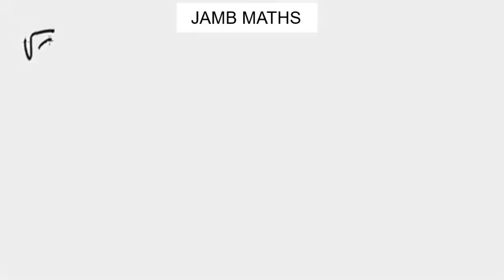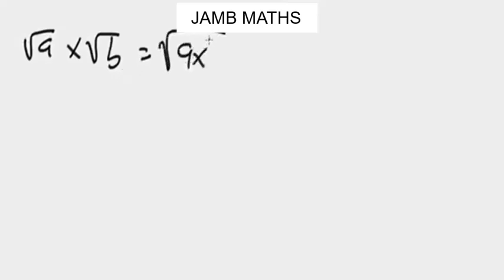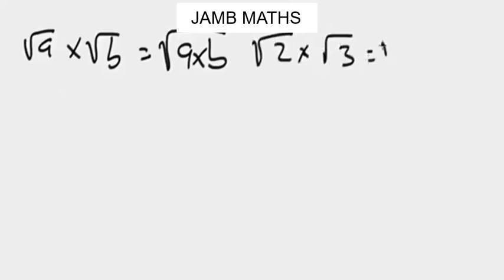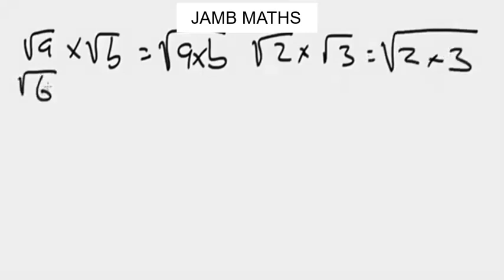When you have something like square root of a times square root of b, this is the same thing as square root of a times b. For instance, let's make this into numbers. If we have square root of two times square root of three, this is the same as square root of two times three, which gives us square root of six.